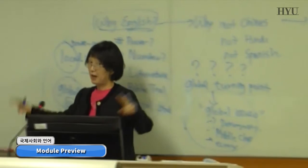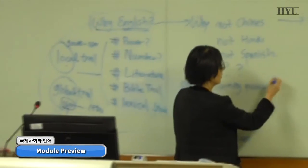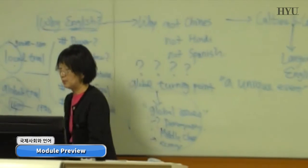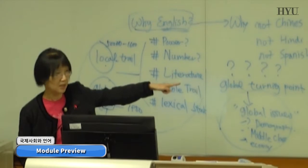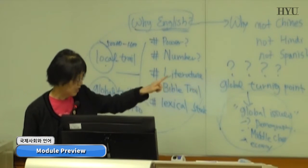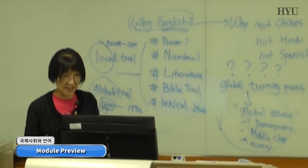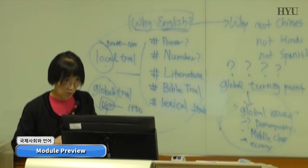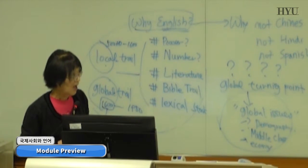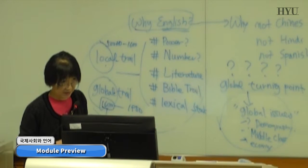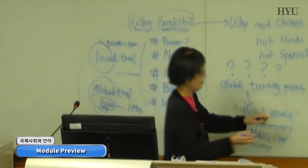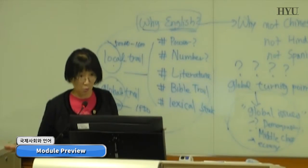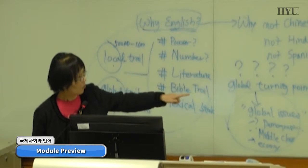Our textbook author, David Crystal, stresses the concept of a unique event — something occurring in recent times in global society that has never happened in human history. We are going to talk about what this unique event is and how it will affect English's position as a dominant language. This concept involves three circles, which is about the spread of English around the world.